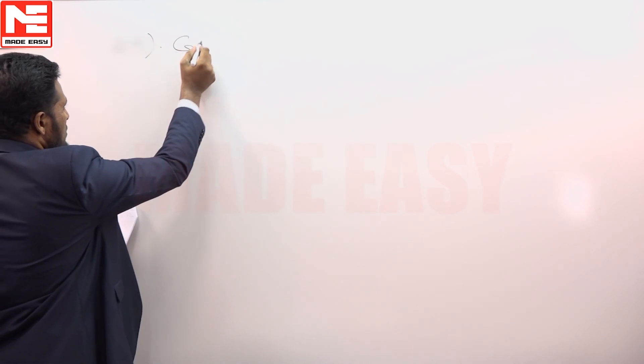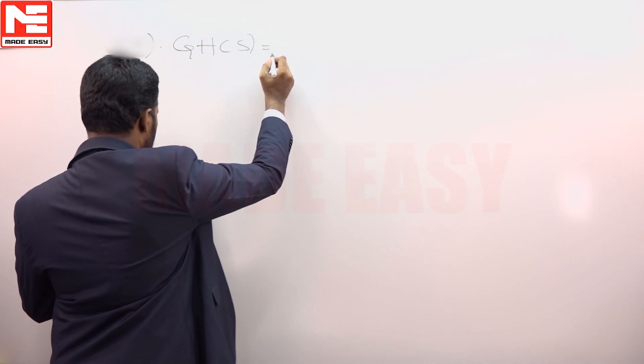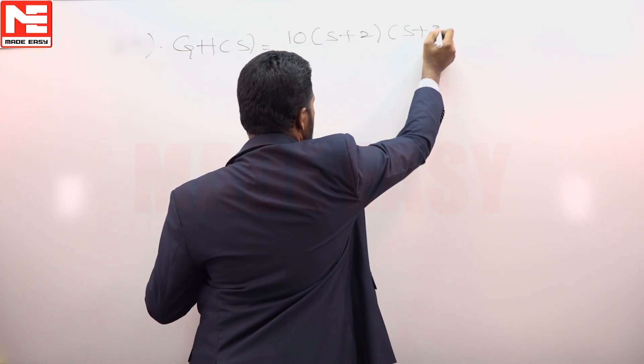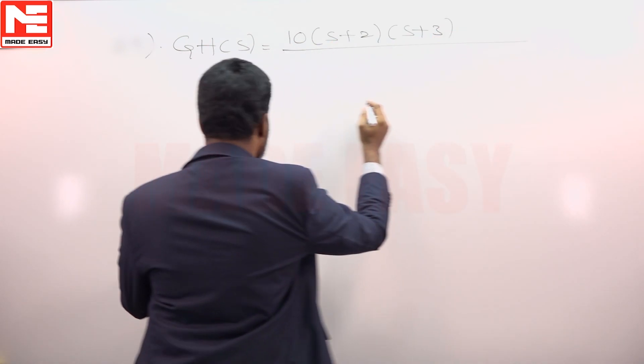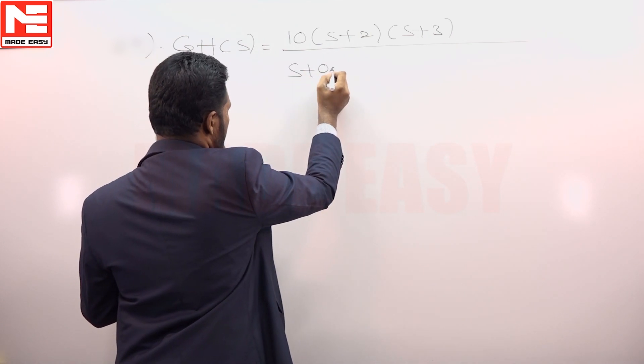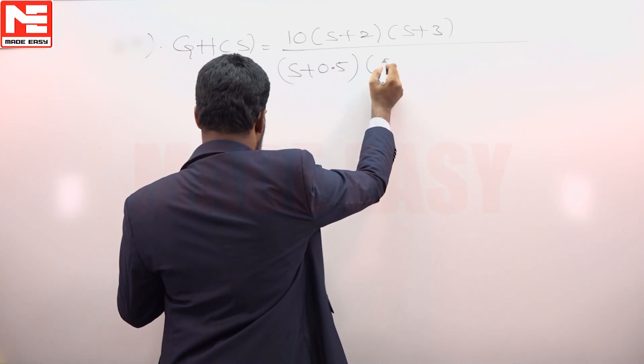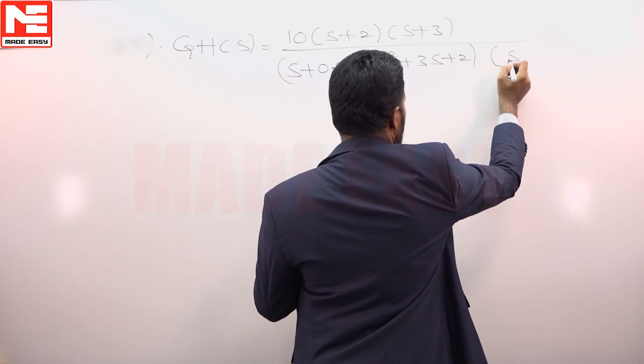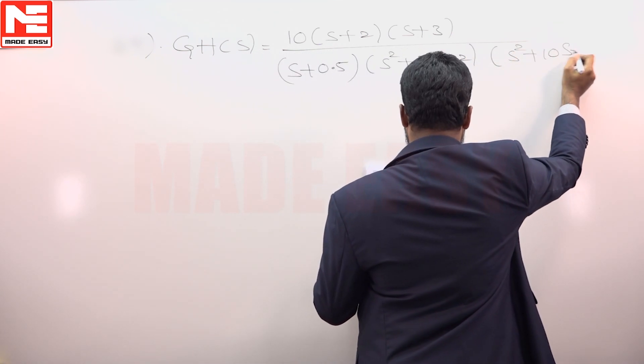Open loop transfer function of a system is given: 10(s plus 2)(s plus 3) upon (s plus 0.5)(s squared plus 3s plus 2)(s squared plus 10s plus 300).